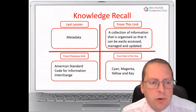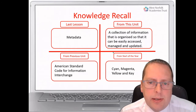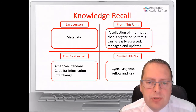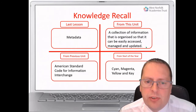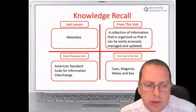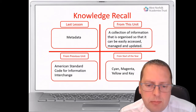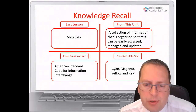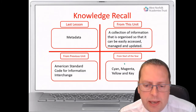Hopefully you've got the answers of metadata. For a database: a collection of information organised so that it can be easily accessed, managed, and updated. ASCII stands for American Standard Code for Information Interchange. And the four colours found in a printer are cyan, magenta, yellow, and key.